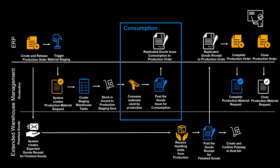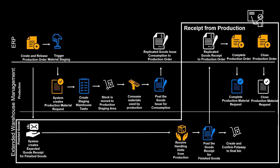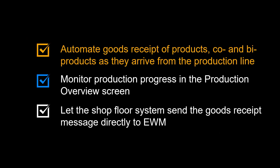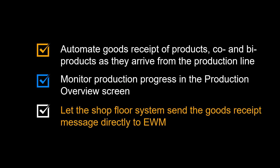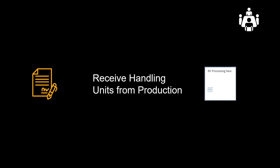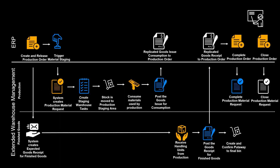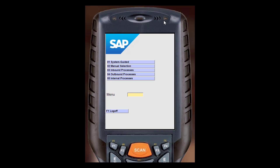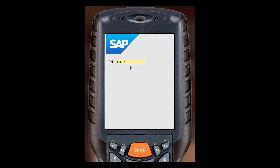When components have been consumed and finished products start coming out of the production line, we can start the receipt from production. We can use the receipt from production to automate goods receipt of products, co-products, and by-products as they arrive from the production line. We can monitor production progress in the production overview screen in EWM, and let the shop floor system send the goods receipt message directly to EWM. It's time to do the receipt of the goods. This can be done using the RF support in EWM — we use the RF devices just like we do for other incoming goods, by warehouse order, and comply with the instructions on the screen.